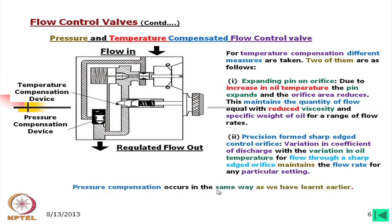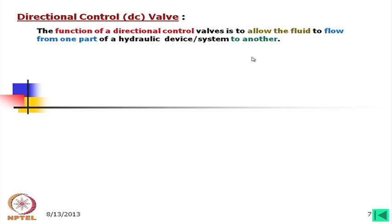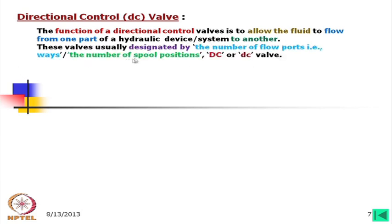Now we will look at the direction control valve. In an earlier lecture I have already discussed a little bit about the direction control valve — it is the most essential component in any hydraulic circuit. The function of directional control valves is to allow the fluid to flow from one part of a hydraulic system to another. The valves are designated by the number of flow ports, or ways, and by the number of spool positions.